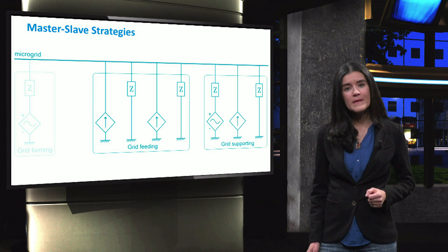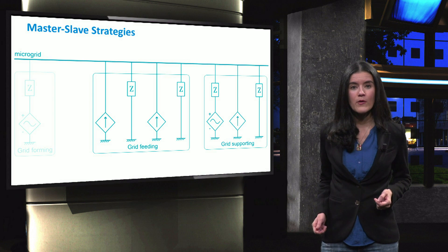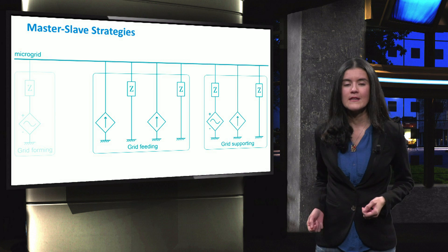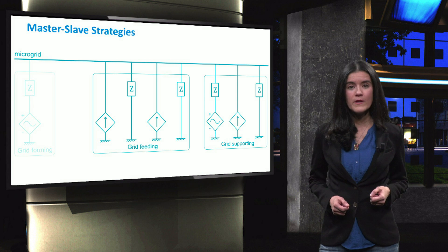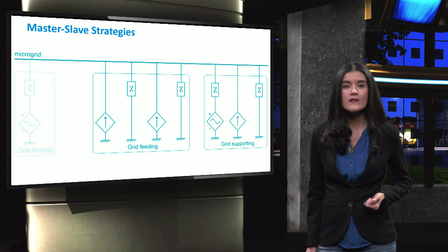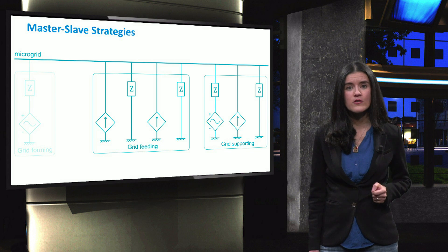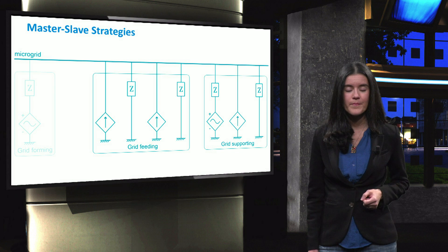However, the system cannot be easily expanded, and the supervisory control is needed to always share the power in a proper way. Importantly, this control strategy relies on communication technologies, which give lower reliability due to uncertain communication links. To overcome all these problems, a multi-master control strategy is often proposed.